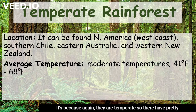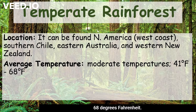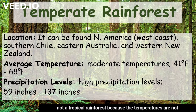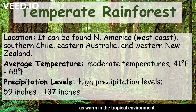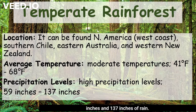They're temperate, so they have pretty moderate temperatures from 41 degrees Fahrenheit up until 68 degrees Fahrenheit. But like their name says, they are a rainforest — not a tropical rainforest because the temperatures are not as warm. However, they do receive a lot of rain, anywhere between 59 inches and 137 inches of rain.